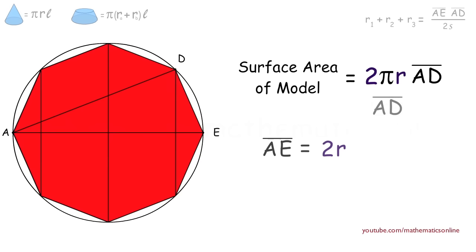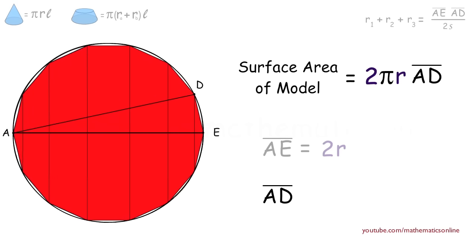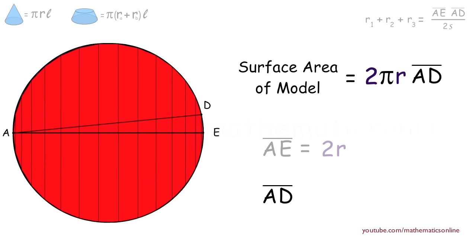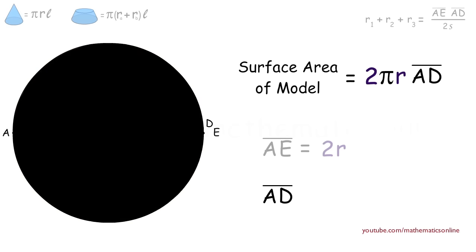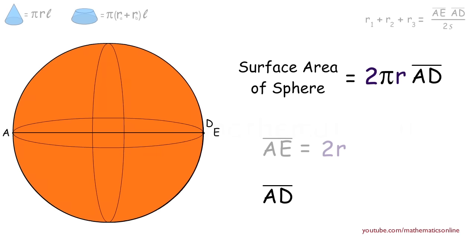Next, let's look at line AD. What we are going to do is increase the number of sides of the inscribed polygon and look at what happens to line AD. As we can see, line AD begins to approach the diameter. So now we increase the sides of the inscribed polygon to infinitely many sides. The first thing to point out is that the surface area of the model becomes equal to the surface area of the sphere. The second thing is that line AD eventually becomes equal to the diameter, which is equal to 2R.